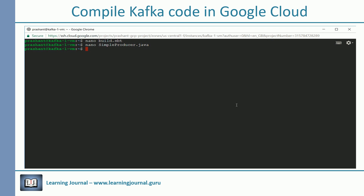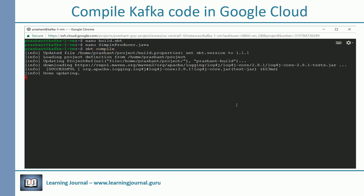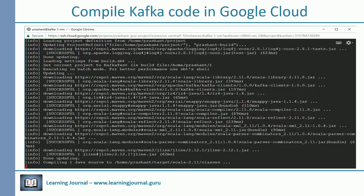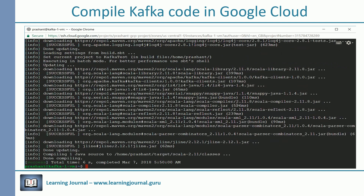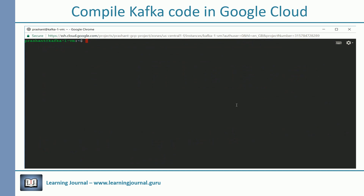You are now ready to compile your simple producer example. Execute the command as shown below to compile your program. You should see a success message at the end. You can then execute your program using the SBT run command.